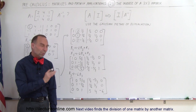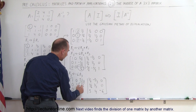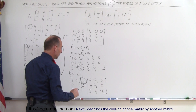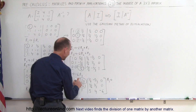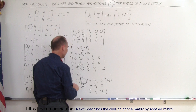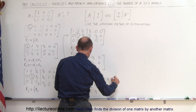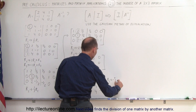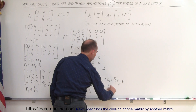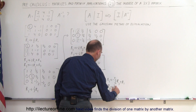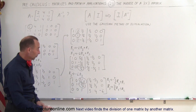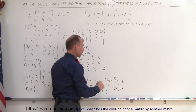Now we have 1s across the diagonal. The only thing left is to turn the remaining off-diagonal entries in column 3 into 0s. We take row 1 and replace it by adding negative five sixths times row 3 to it, and replace row 2 by adding positive one sixth times row 3 to it. Negative five sixths times one is negative five sixths, added to five sixths gives 0. Let's see what the final result is.